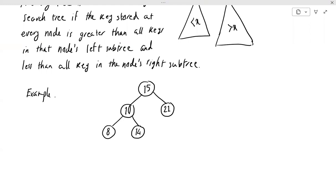And the same story goes for node 21. The left child must be something less than 21 but greater than 15 (since this node is in the right subtree of 15), so maybe 18. And on the right side of 21, a key that is greater than 21, and so on. That's what we call a binary search tree.